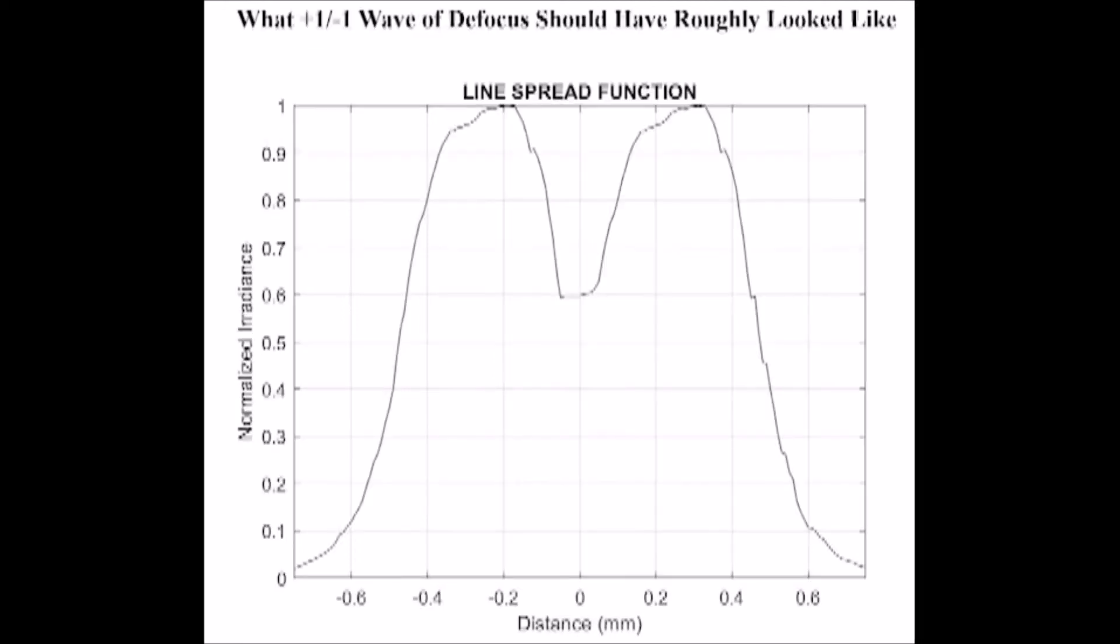In the plus and minus 1 wave positions, we should see 2 peaks in the raw data with a dip in the center. The Fresnel number for 1 wave of defocus is 2 and negative 2. In the center, destructive interference is happening creating the dip. Constructive interference is happening in the ring surrounding the center.